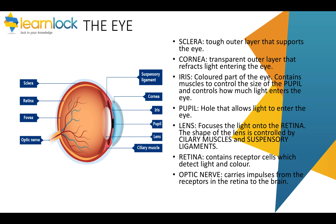The pupil is actually a hole that allows light in. The lens is behind it and focuses the light onto the retina, which is the back of the eye. The lens is controlled by ciliary muscles and suspensory ligaments. The retina contains receptor cells which detect light and colour, and then send a message along the optic nerve, which carries impulses from the receptors to the brain.